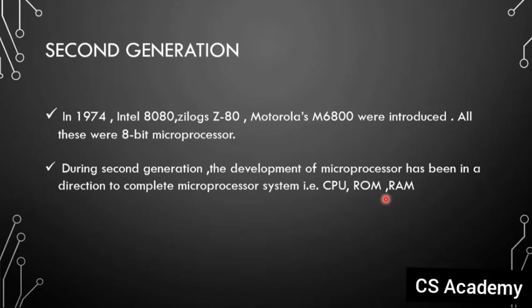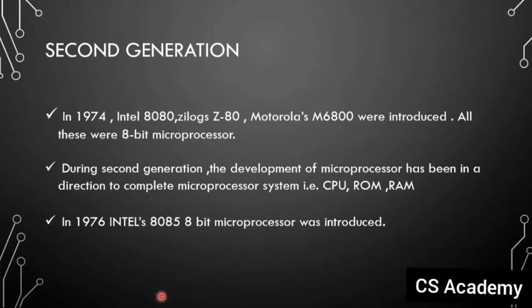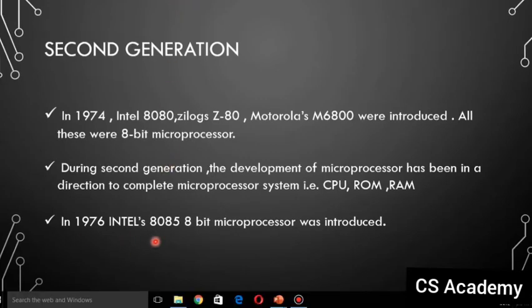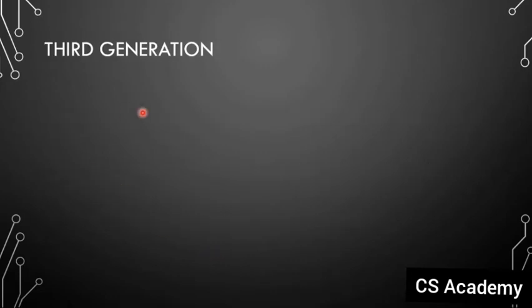The microprocessor system development continued. In 1976, Intel's 8085, an 8-bit microprocessor, was introduced in the second generation. So Intel improved the 8080 to make the 8085 — this is a new improvement that came in the second generation.